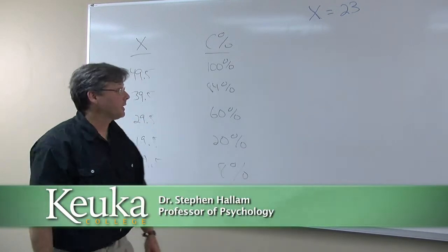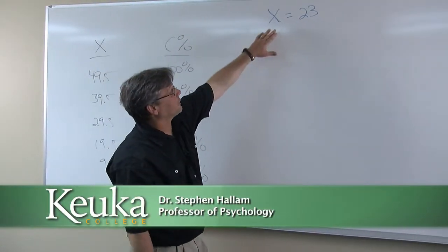OK, here we go with our third interpolation question. This time we're looking at an X score of 23.